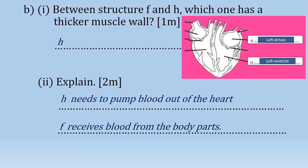Let's say another question asks you to compare the thickness of the wall between the left and right ventricle. The answer is still the left ventricle, because the left ventricle has to pump blood at a higher pressure to reach all areas of the body. But the right ventricle only has to pump blood to the lungs.